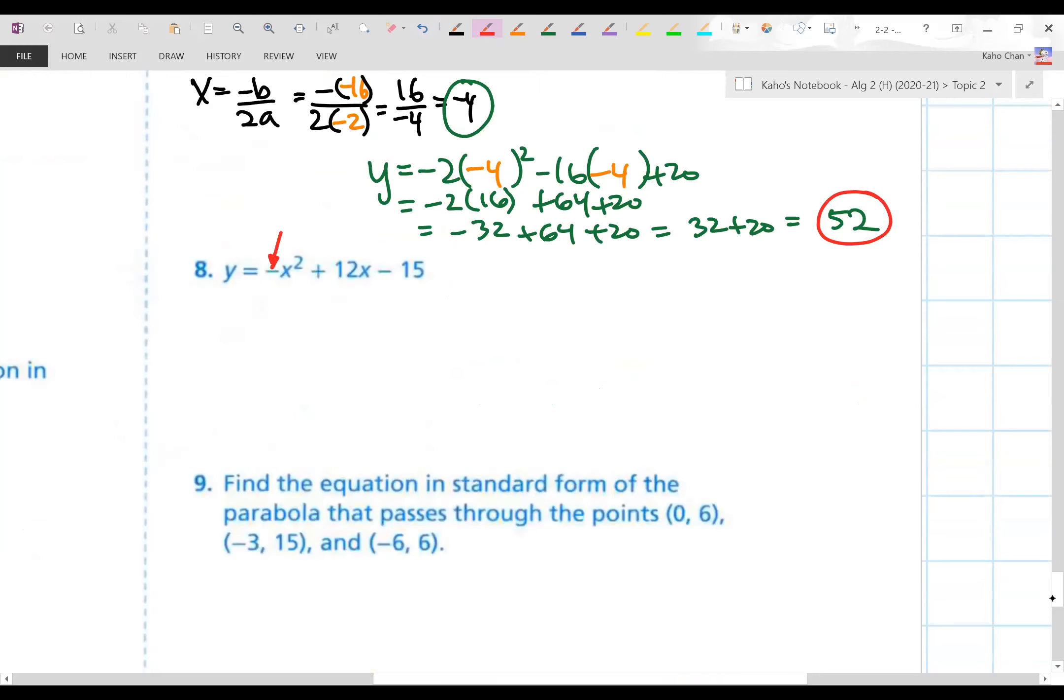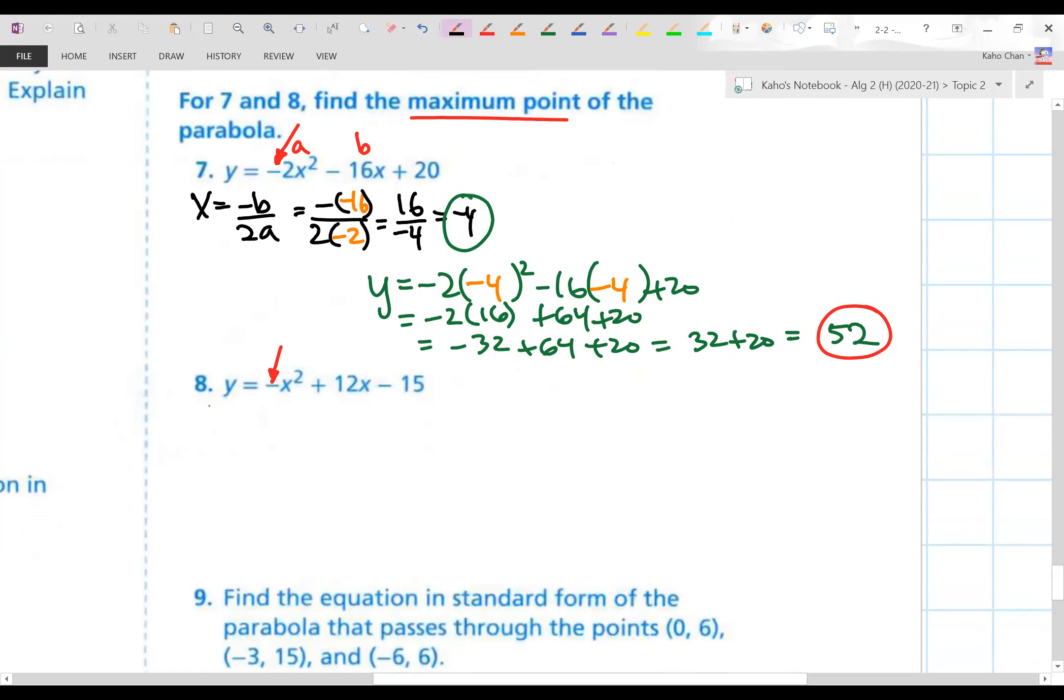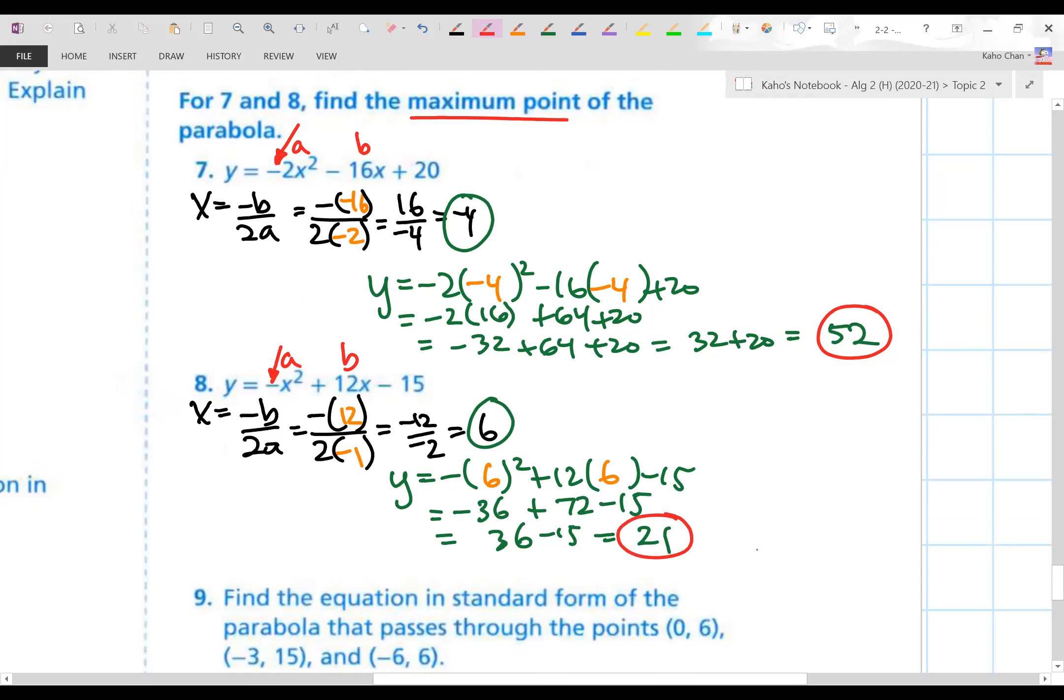Number 8. Same process. Here we go. Plug in 12 for b and a is negative 1. Watch out for those invisible negative 1s. There's negative 12 and the negative 2. And this reduces to positive 6. Plug that number to the equation. And watch out for your order of operations. Negative is not part of the 6. The 6 is square. That's positive 36. Slap on the negative in front. 12 times 6 is 72. Clean that up. Oh, there it is. 21 is your maximum value.